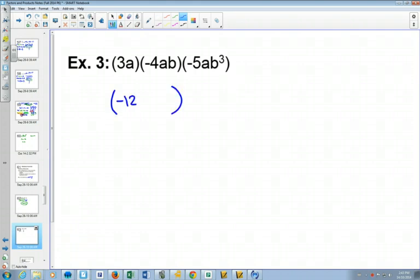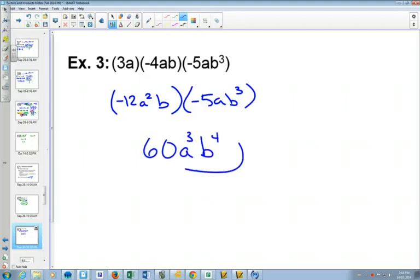Try another one. Multiplying these two first, you get negative 12a squared b, and you'd still have negative 5ab cubed. And now when you multiply those, you'll get positive 60a cubed b to the four.